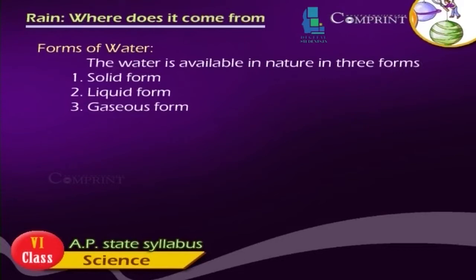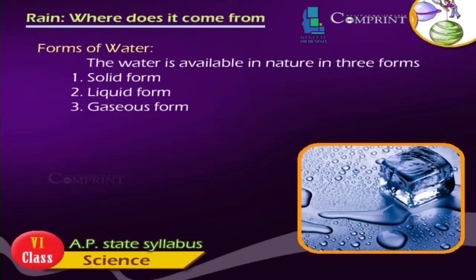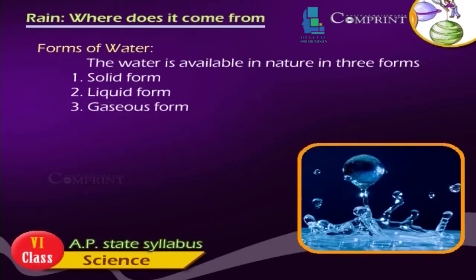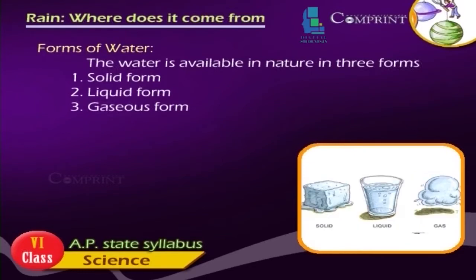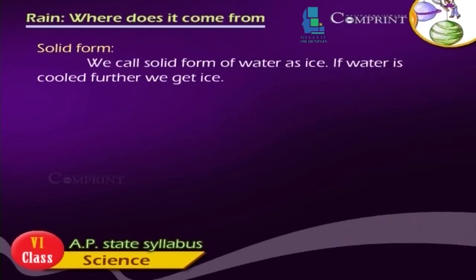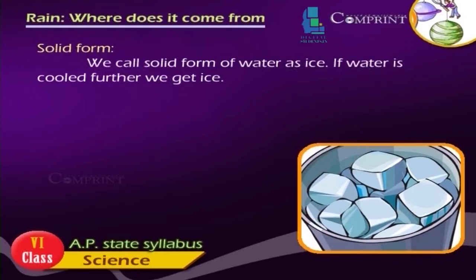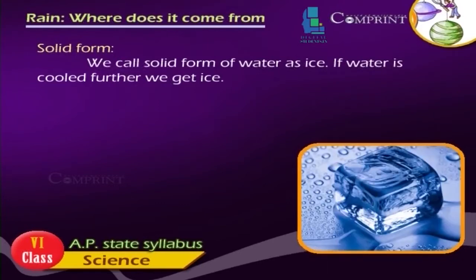Forms of water: Water is available in nature in three forms — solid form, liquid form, and gaseous form. We call the solid form of water ice. If water is cooled further, we get ice.